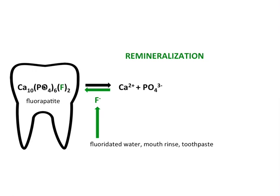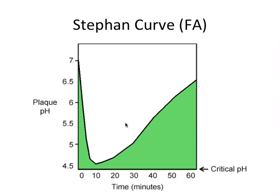Let's revisit the Stephan curve — this time we're talking about fluorapatite and not carbonated hydroxyapatite. This is the new and improved curve, and the critical pH is lower, at around 4.5, which means it will take a much stronger acid challenge to cause decay. You can visualize the benefits just by looking at the area of the curve here and comparing it with the previous graphs — we don't even reach under the critical pH with an acid challenge. That's how awesome fluoride can be: with steady fluoride exposure, we don't have to worry as much about the things we discussed before.